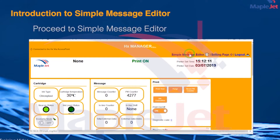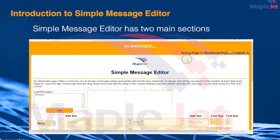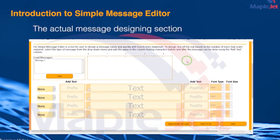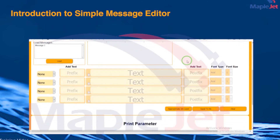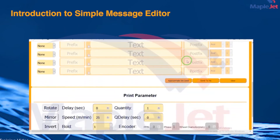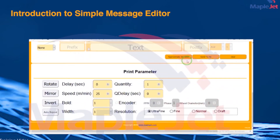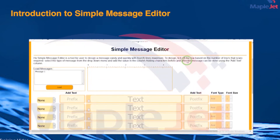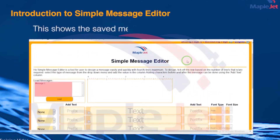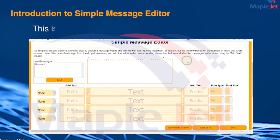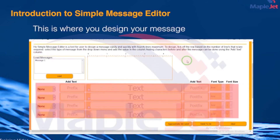Proceed to Simple Message Editor. Simple Message Editor has two main sections: the Actual Message Designing section and the Print Parameter Setting section. This shows the saved messages, a preview of the messages you are designing, and the area where you design your message.